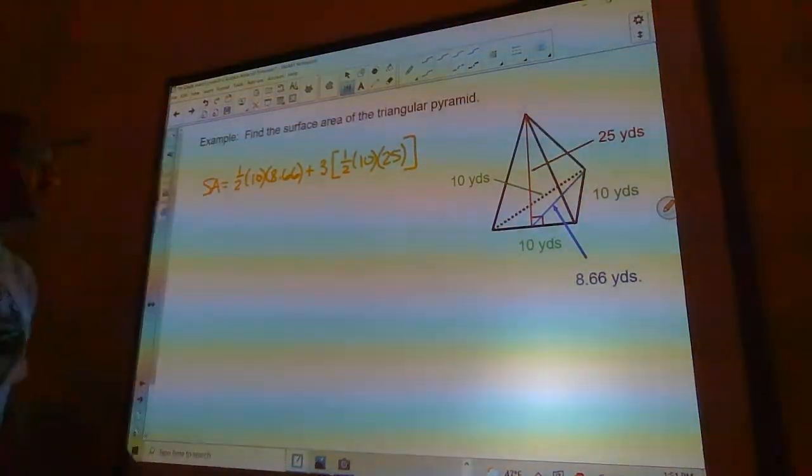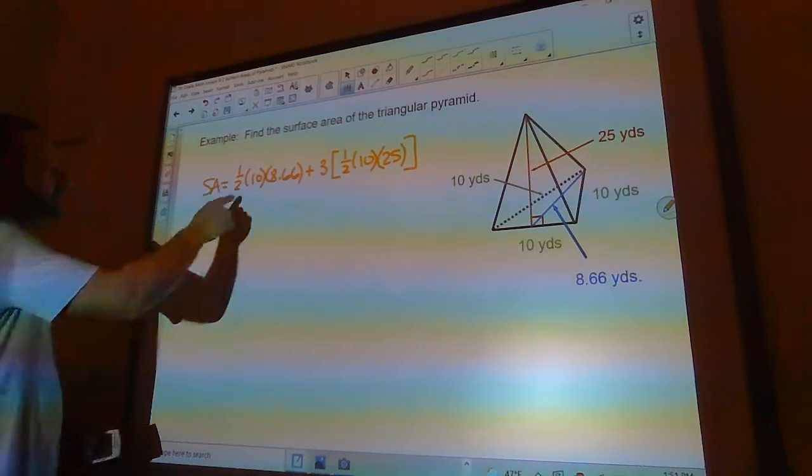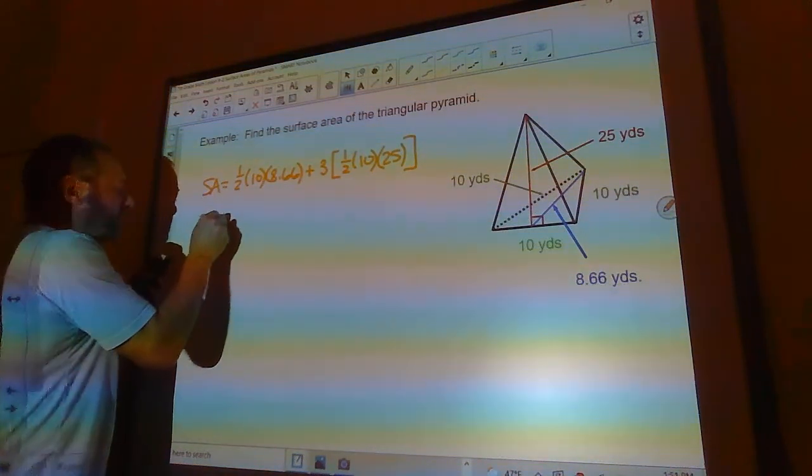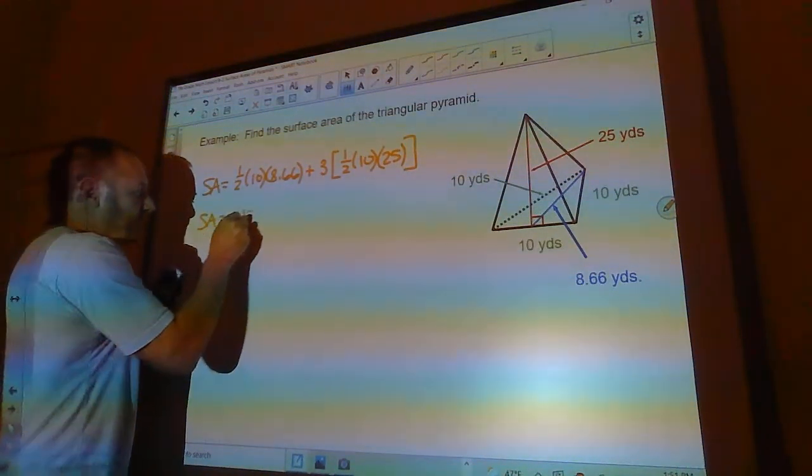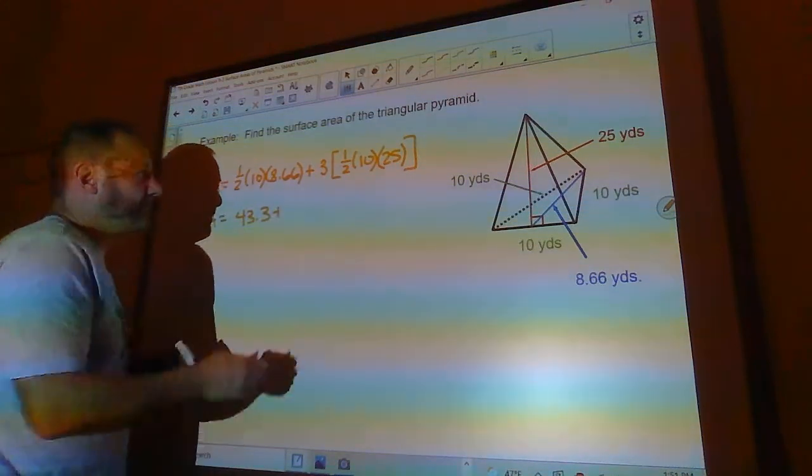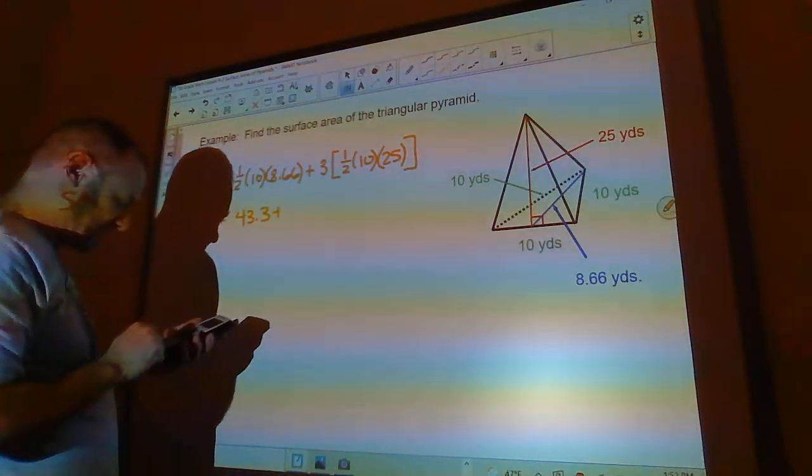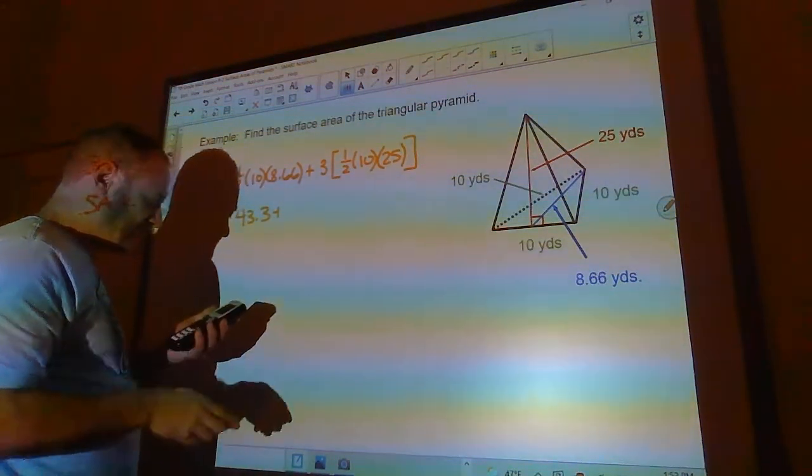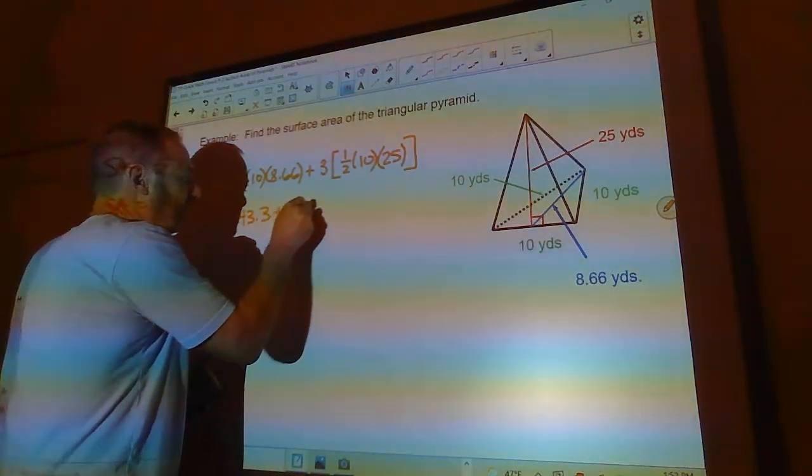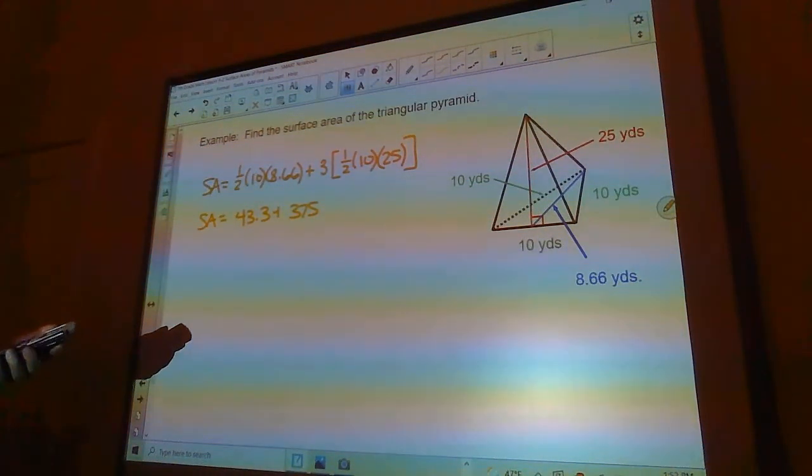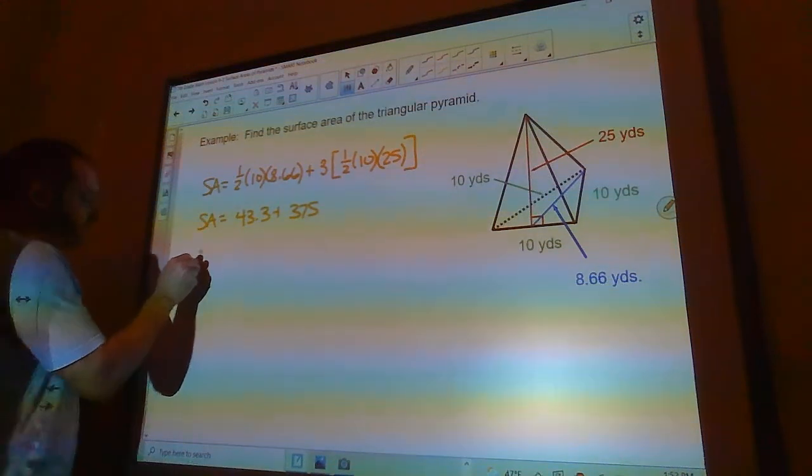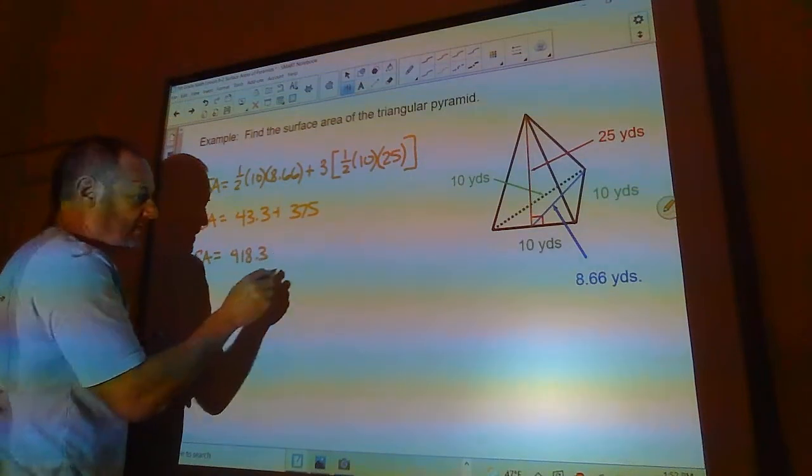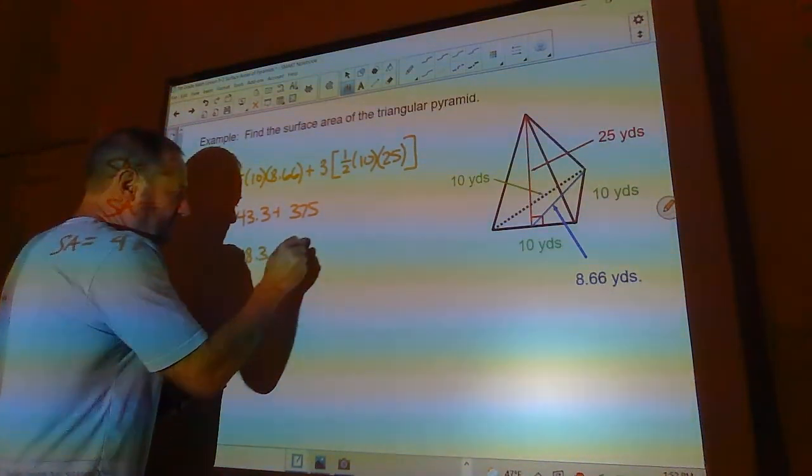Okay, so now we can solve this. This is going to be 5 times 8.66, so this first part is 43.3. Plus 3 times 0.5 times 10 times 25, that's going to be 375. So we add 43.3 to that and we get the surface area is going to be 418.3, and that's in square yards.